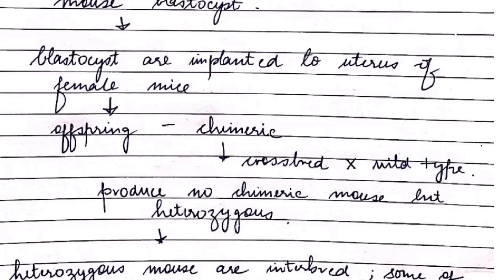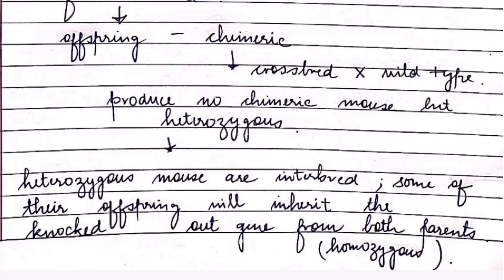The knocked-out stem cells are then inserted into the mouse blastocyst, which is then transplanted into the uterus of a female mouse — the foster mother. The offspring are chimeric; they are cross-bred with wild type, which produces non-chimeric but heterozygous mice. These heterozygous mice are again interbred.